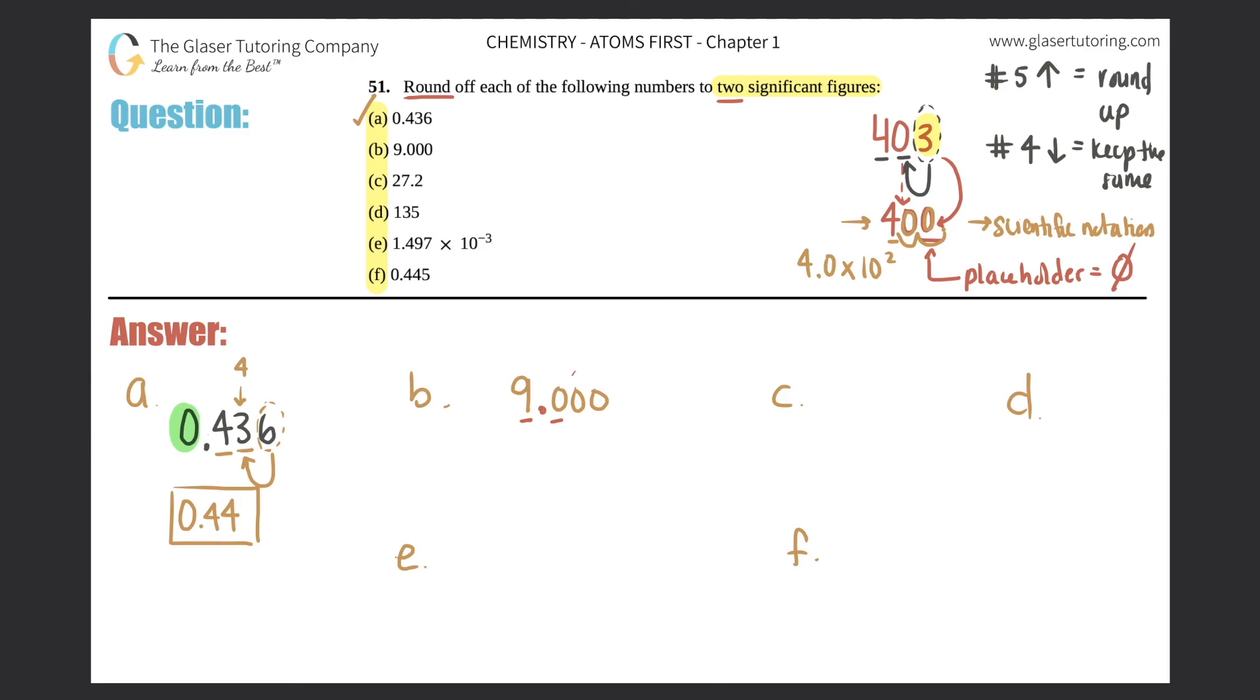But now the next one will tell you if you round that zero to a one or not, but zero is less than five. So it stays the same. So this would be just 9.0. And that's the answer to B. And there's your two sig figs.